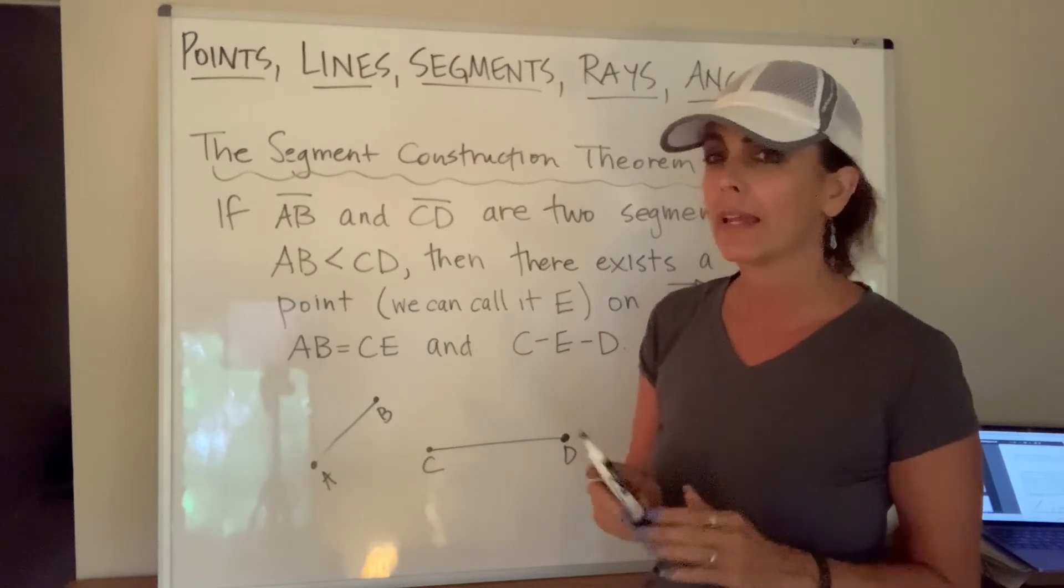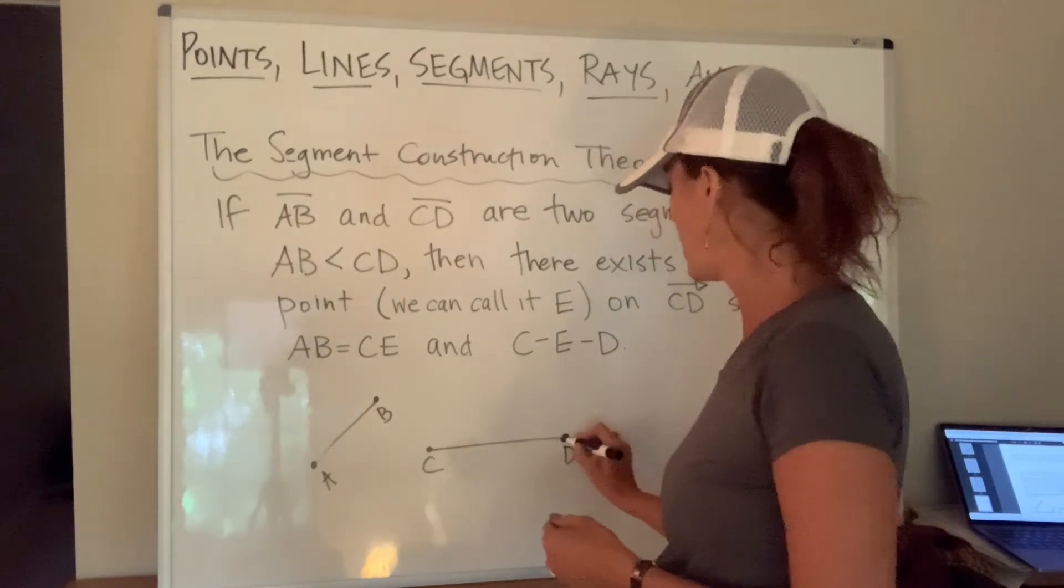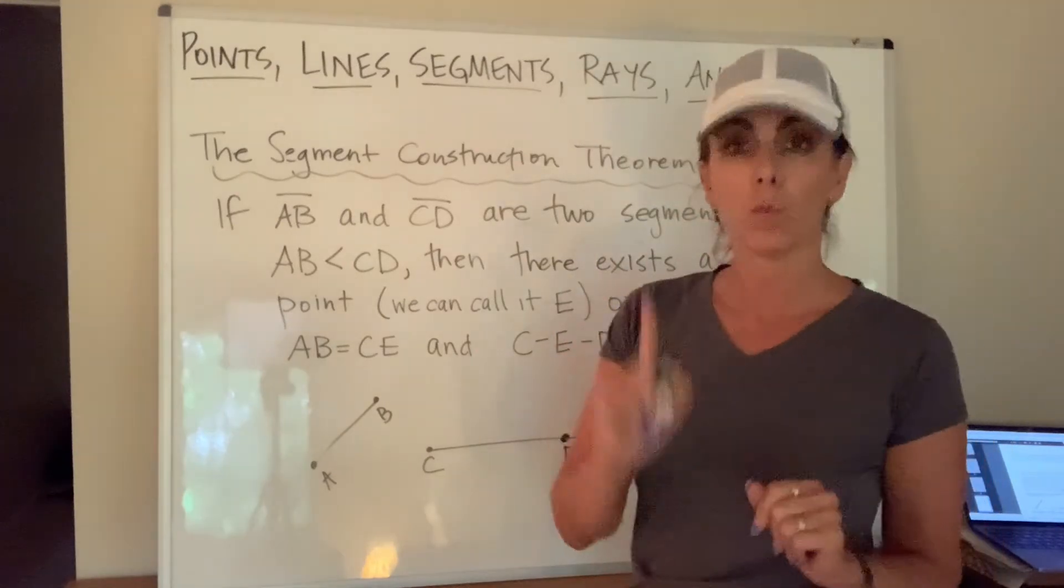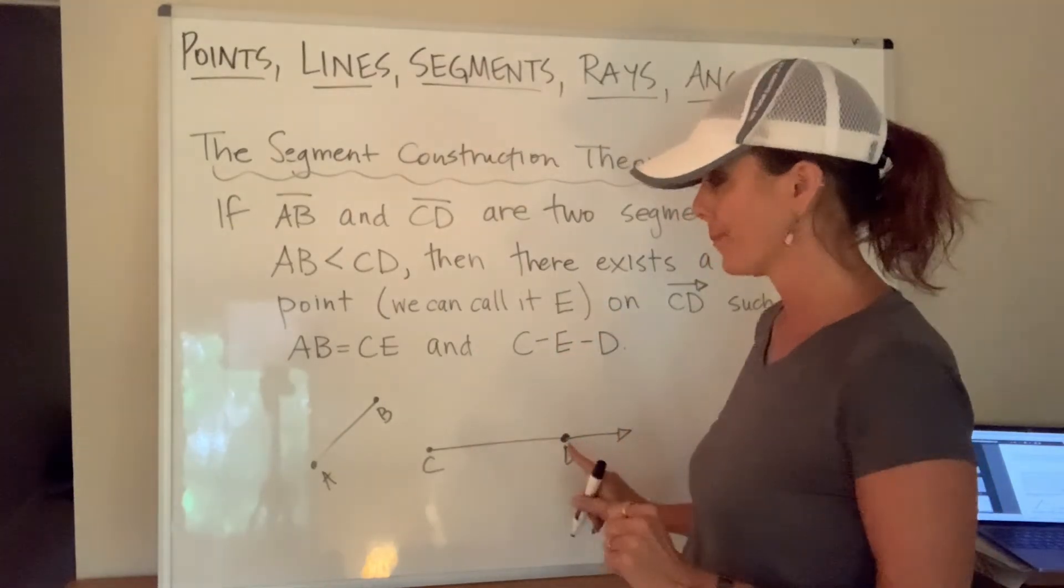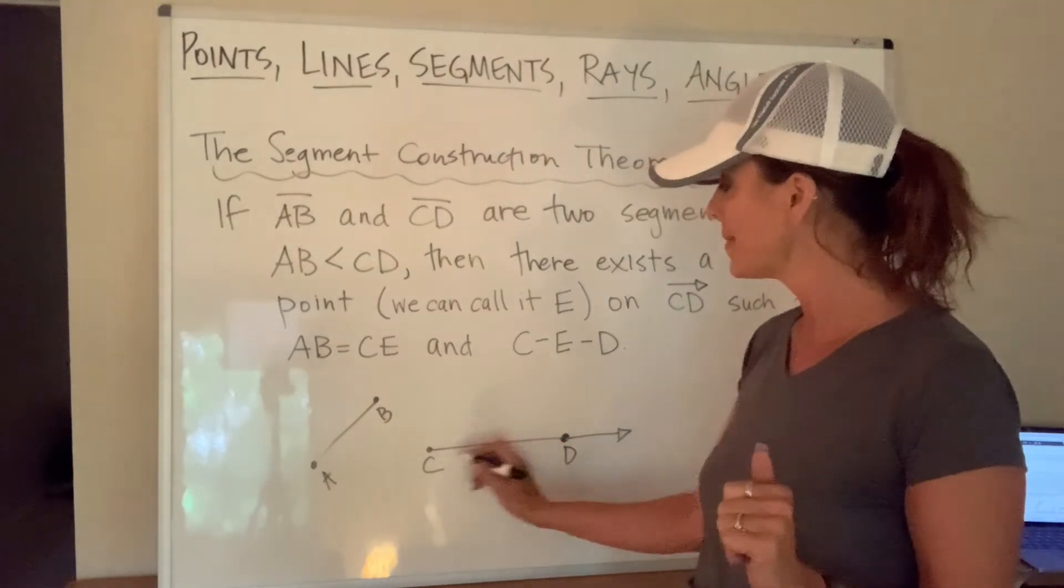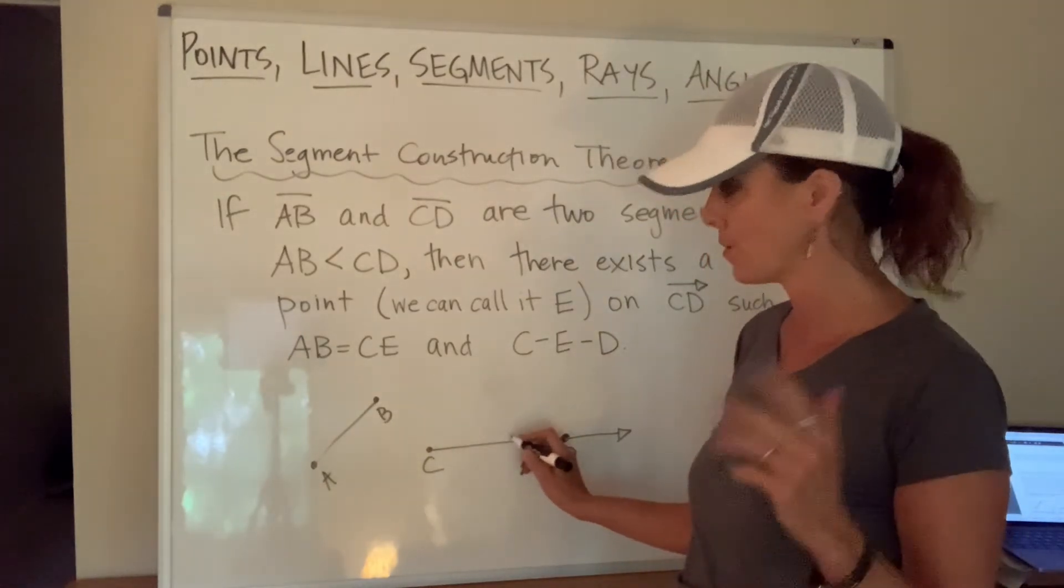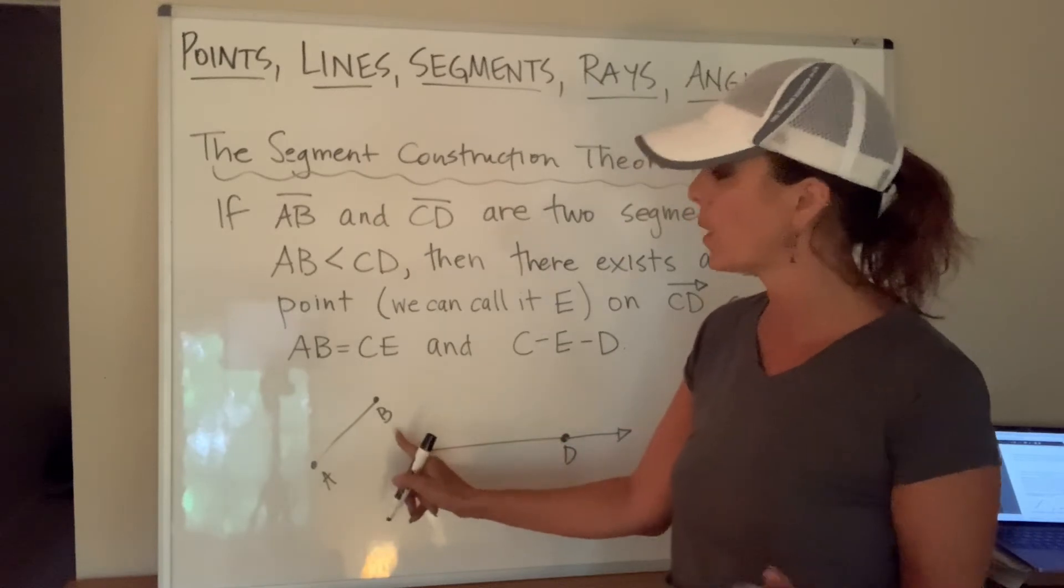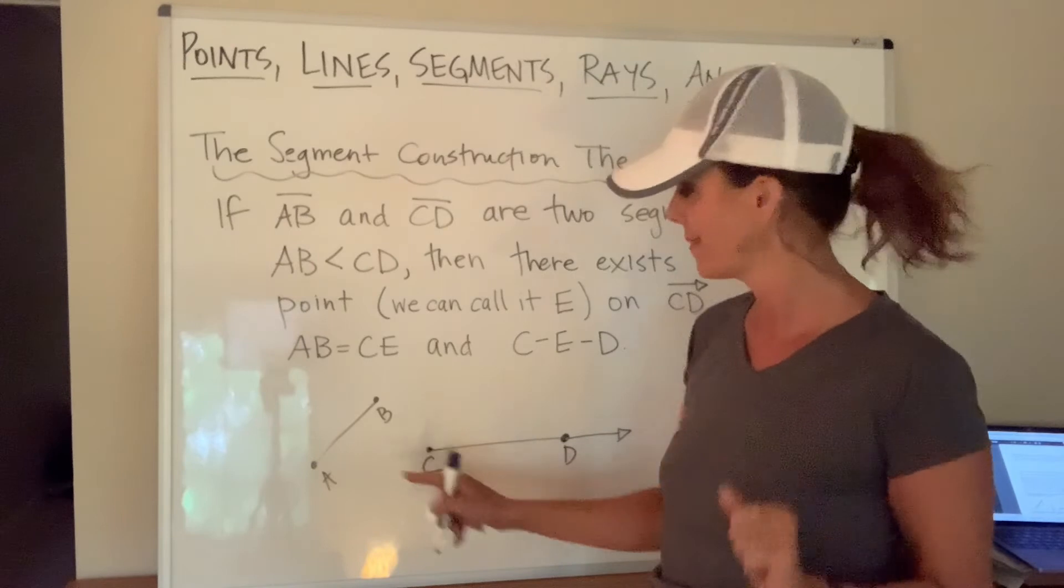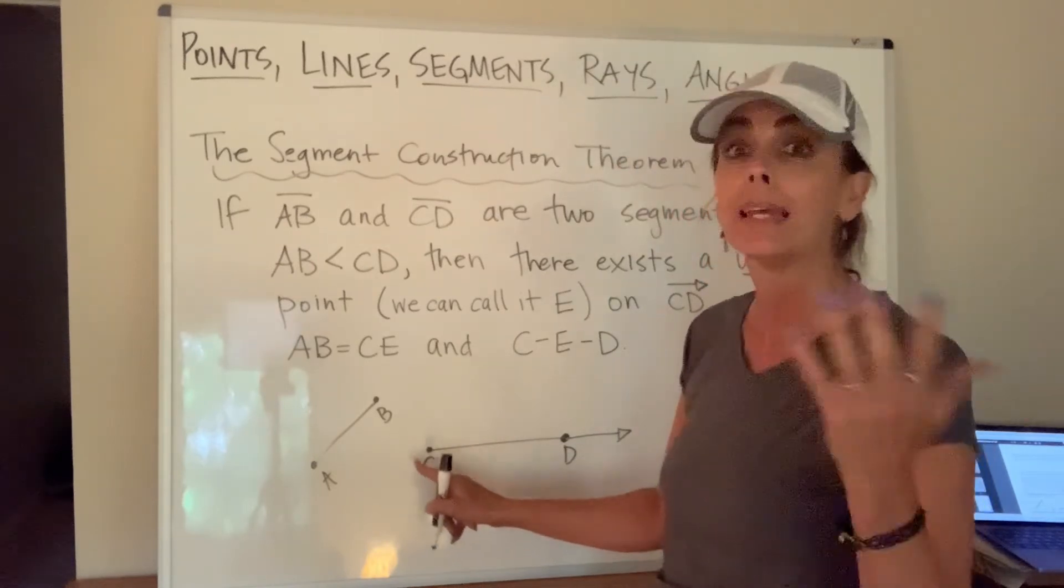What this is saying is that if I were to extend C, D and make it a ray, there's going to be exactly one point on this ray called E that when I position it correctly, I assign it to the right place, it's going to make the distance between A and B exactly the same as the distance between C and E.